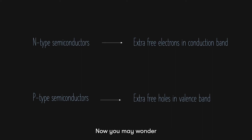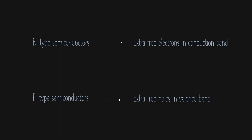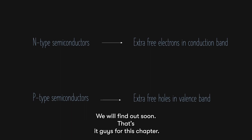In essence, n-type semiconductors have extra free electrons in the conduction band, while p-type semiconductors have extra free holes in the valence band. You may wonder why exactly we need to do this — why do we need these extra free electrons and holes? Well, obviously they are there for a reason, and we will find out soon.